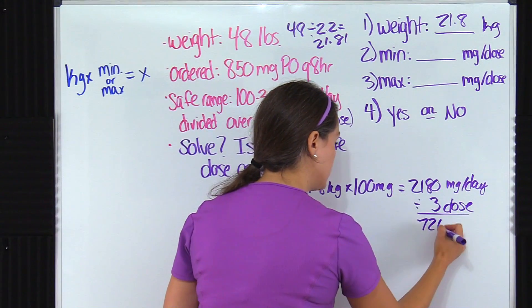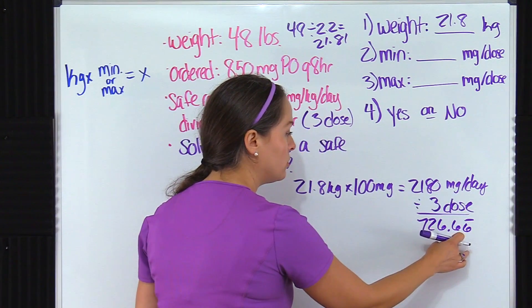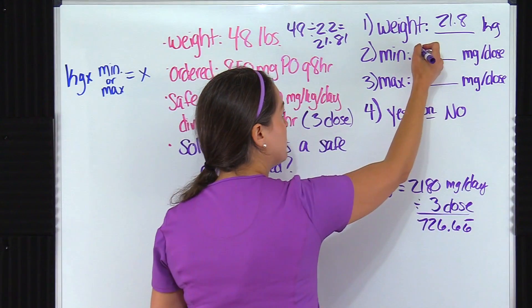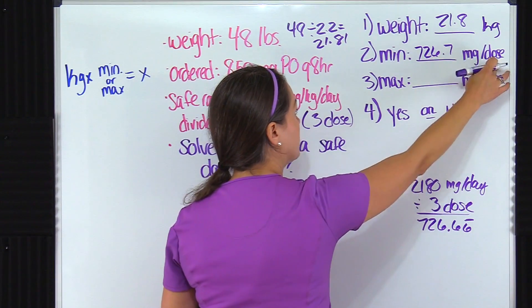And when I divide that number by three, I get 726.6 repeating, and I'm going to round that to the nearest tenth. When I do that, I get 726.7 milligrams per dose.